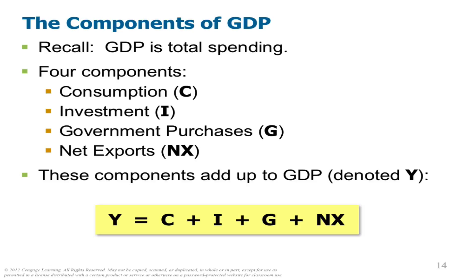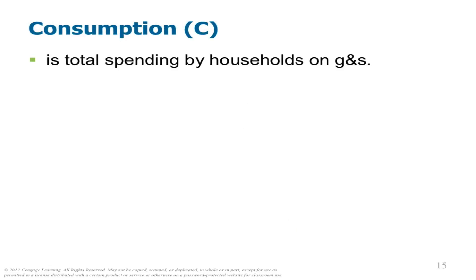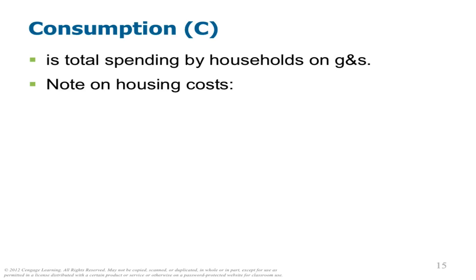NX is exports minus imports. Consumption is the total spending by households on goods and services.